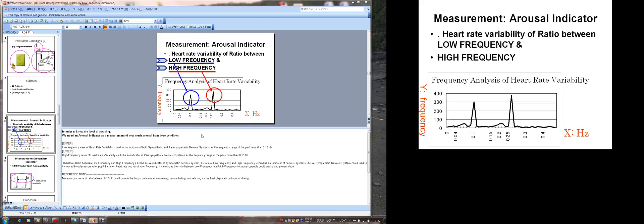In order to know the level of awake, we need an arousal indicator as a measurement of how much arousal are from the dose conditions. Low frequency wave of heart rate variability could be an indicator of both sympathetic and parasympathetic nervous systems as the frequency range of the peak less than 0.15 Hz. High frequency wave of heart rate variability could be an indicator of parasympathetic nervous system as the frequency range of the peak more than 0.15 Hz.